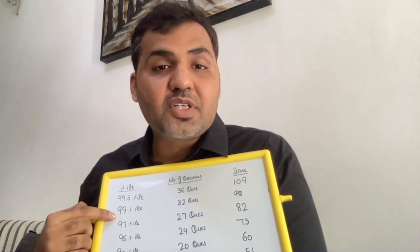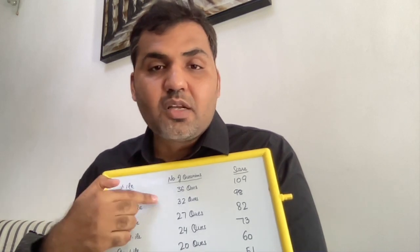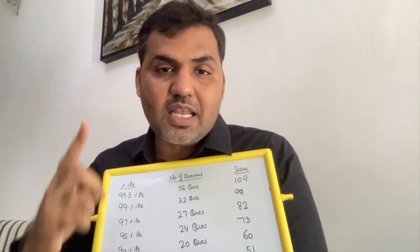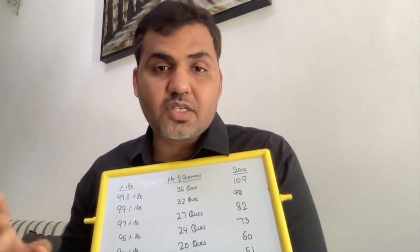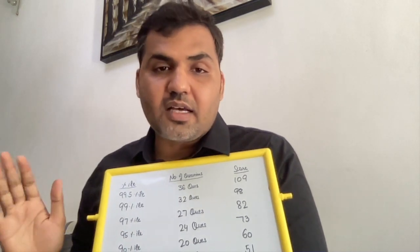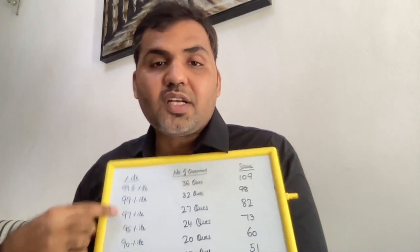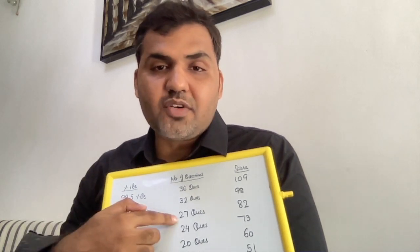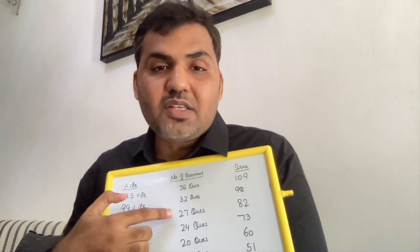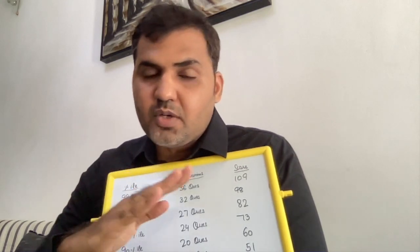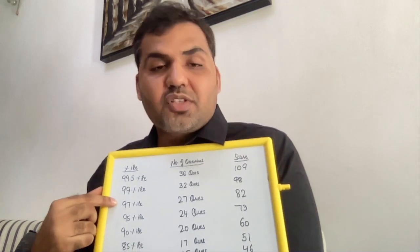So 99 percentile seems very achievable — 12 questions in one section and 10 questions in each of the other two sections is not a difficult task at all. At 97 percentile, it's even easier. 97 percentile requires just 27 questions — a score of 82 gives you 97 percentile. That's 9 questions from each individual section.